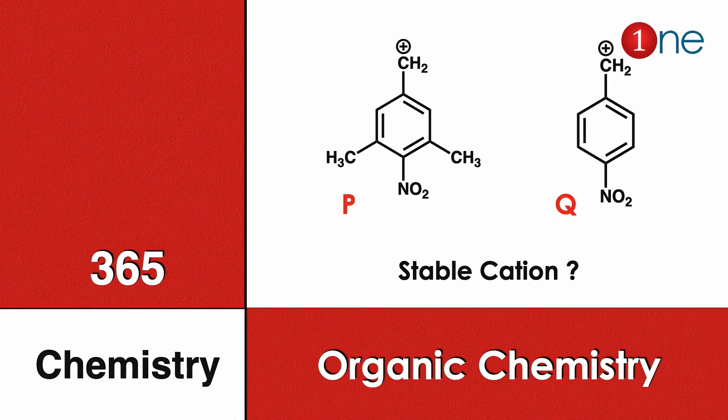Welcome to One Chemistry. This is the 365 Chemistry series — organic chemistry questions. Here you have a nitro compound with benzene with three methyl groups and a cation. The second one is without the meta-methyl group. You should find which of the two cations is more stable.